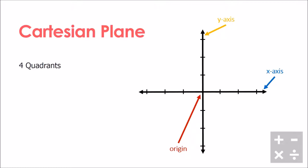The Cartesian plane is also broken into four quadrants. The first quadrant is located in the top right, the second quadrant is over to the top left, the third quadrant is in the bottom left, and the fourth quadrant is in the bottom right. You'll notice it might seem a little counterintuitive — it doesn't go the same way as a clock.